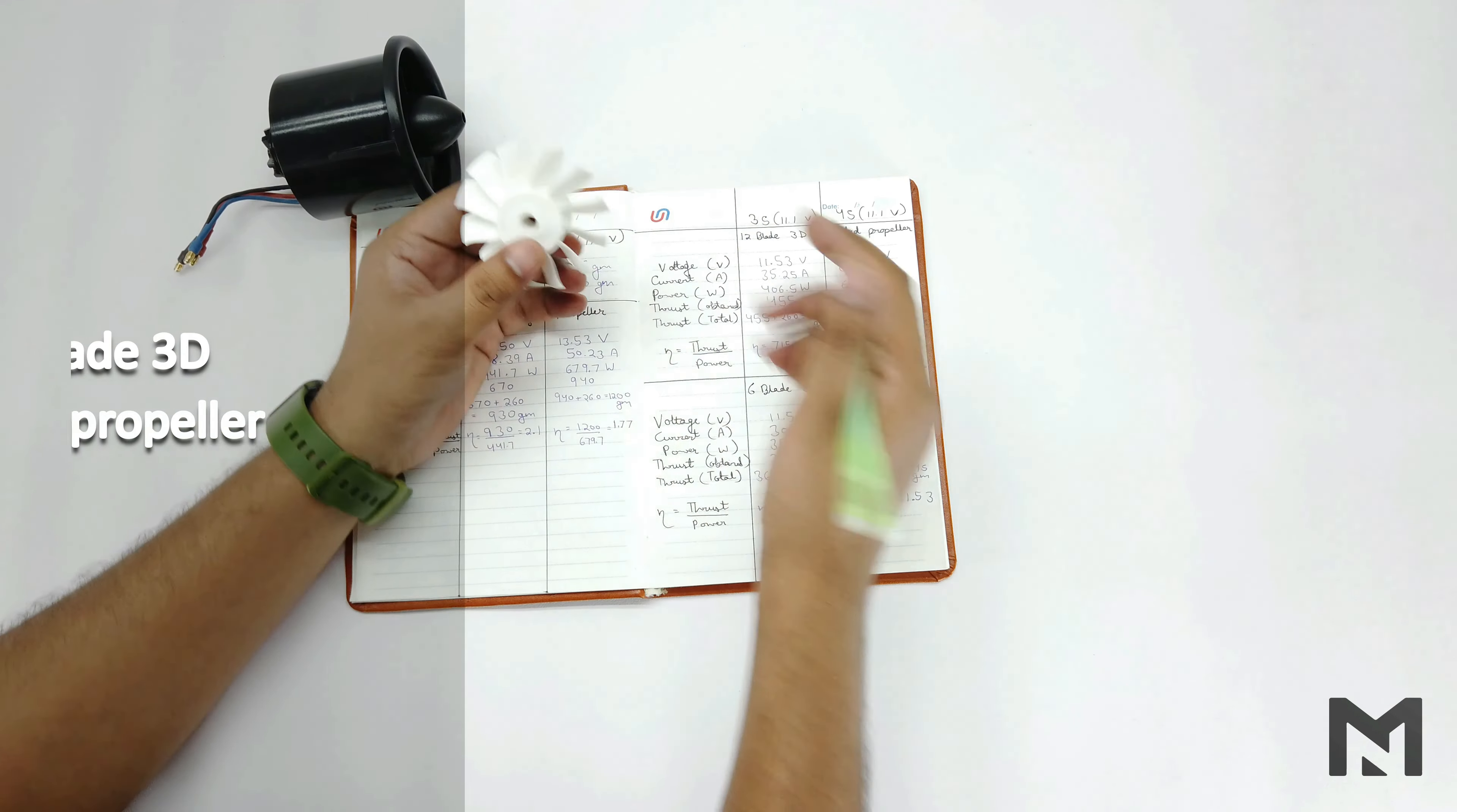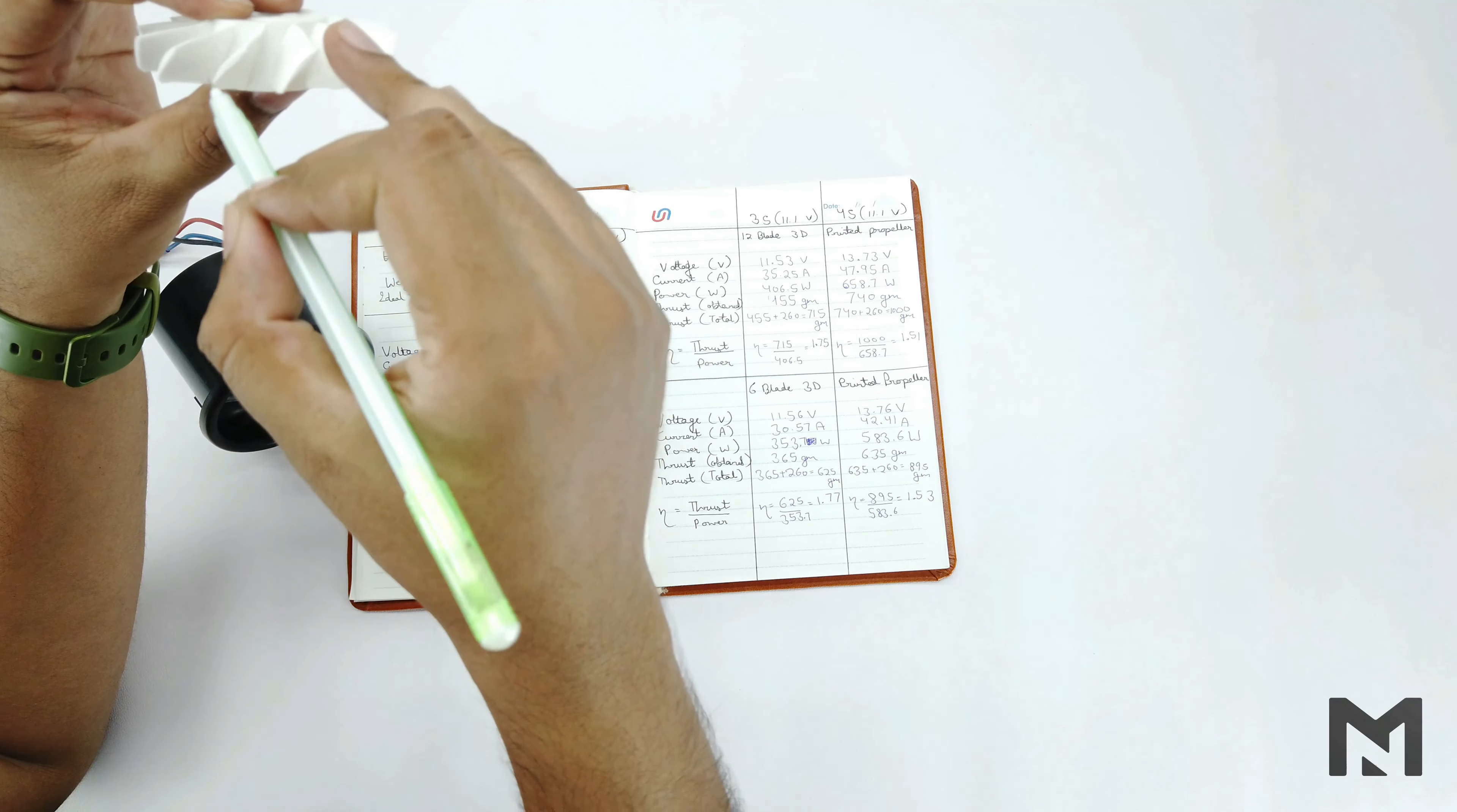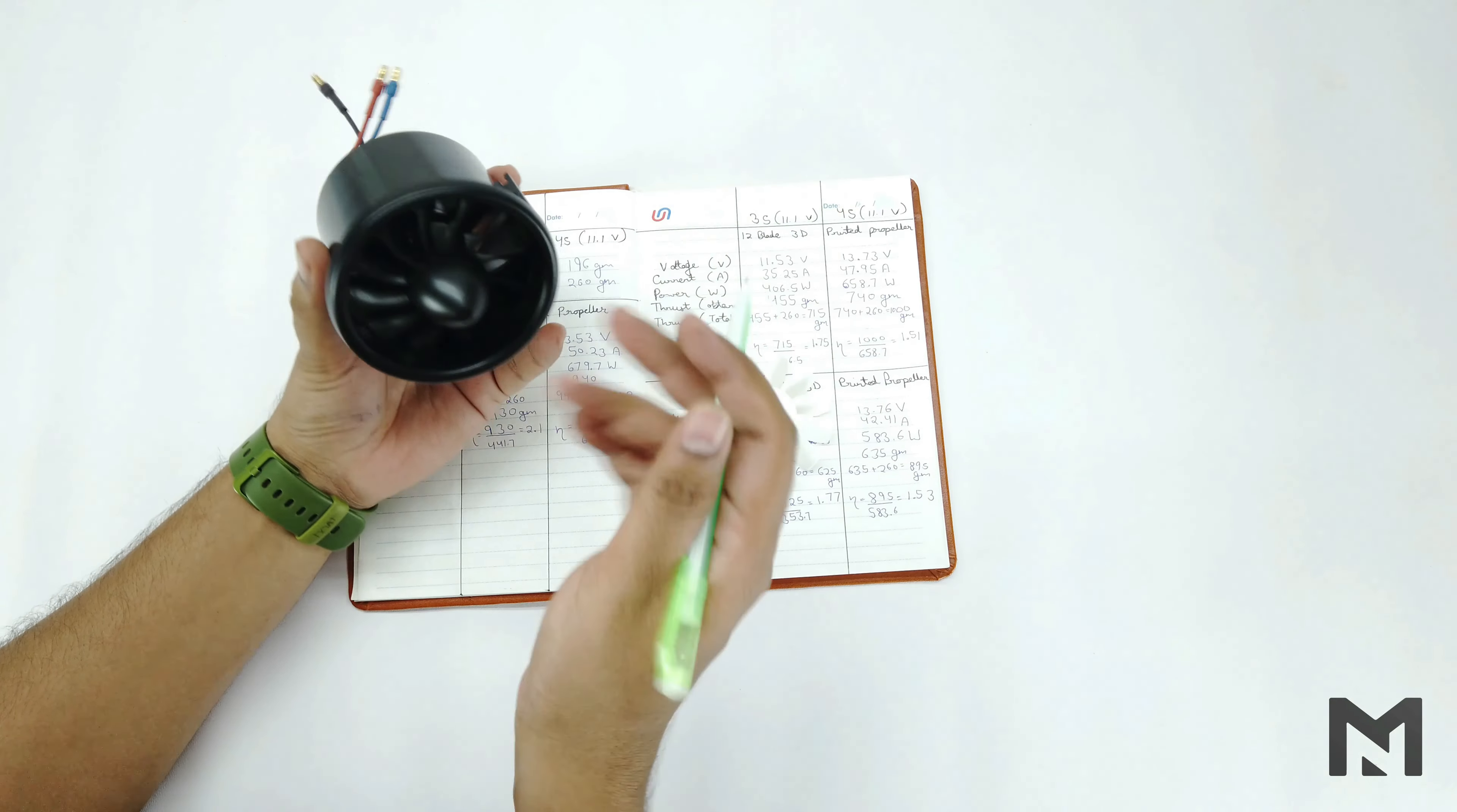When we connected the 12-bladed 3D printed propeller, it gave a thrust of around 715 grams at an efficiency of 1.75. The original one gave the efficiency of 2.1. Yes, the efficiency went down because it's 3D printed and I have designed it by myself. As you know, it can't be designed exactly the same like the original one without proper dimensions. You can see this curvature has a slightly different profile and it's difficult to design. And the 3D printed parts have a rough surface which results in frictional loss. While using the 4S battery, it gave a thrust of 1000 grams at an efficiency of 1.51. So if you compare, the original one gave us 1200 grams while this one gave around 1000 grams. There is a difference of around 200 grams, which is quite okay since we have designed it by ourselves. And this one I bought for around $40.